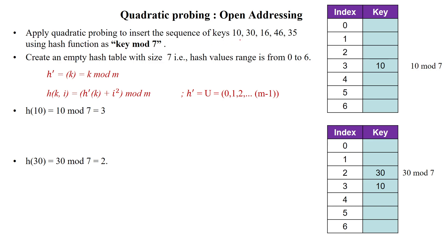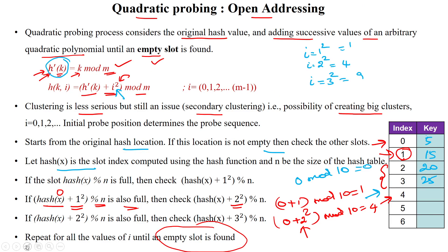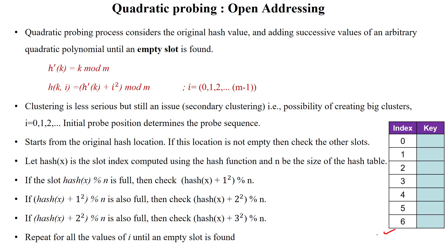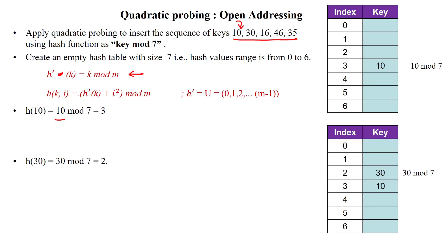We will now see one example to insert a sequence of numbers acting as both data and key. The hash function is h(k) = k mod m. Initially, 10 is being inserted into an empty table. So 10 mod 7 equals 3. The 3rd index of the empty table is free, so 10 is inserted at index 3.